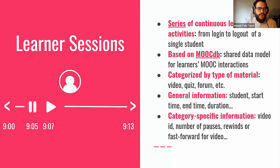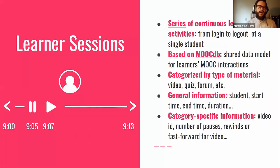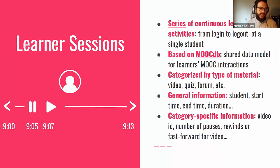The sessions have general information: the student executing the session, the start time, end time, duration. But they also have category-specific information. For instance, a video learner session would have the video ID, the number of pauses, rewinds, fast forwards, etc. As an example, a student starts watching a video at 9:00, pauses at 9:05, plays again at 9:07, finishes at 9:13 — so you have a duration of 13 minutes with one pause, one play, and so on.